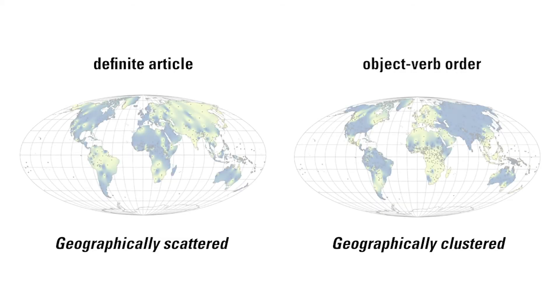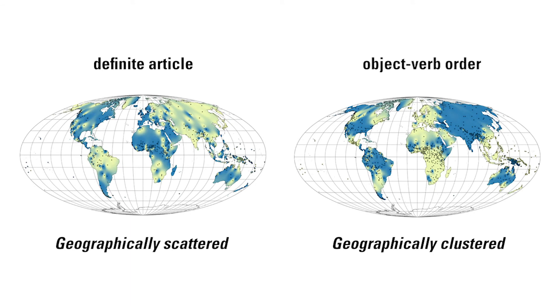The quantities we look at are: what percentage of languages has a given feature, and among neighboring languages in close geographic proximity, how often does one have the feature while the other does not? This tells you how clustered the feature is spatially — whether it appears in large contiguous regions or in scattered patches — which in turn reveals the temperature.